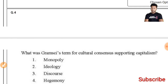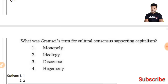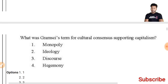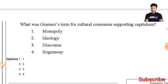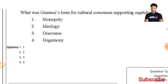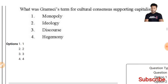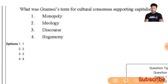Question 4: What was Gramsci's term for cultural consciousness supporting capitalism? The term given by Antonio Gramsci is 'cultural hegemony,' so the fourth option is the right answer.